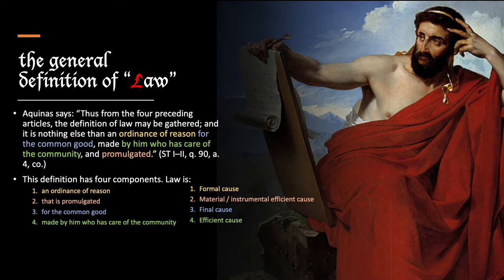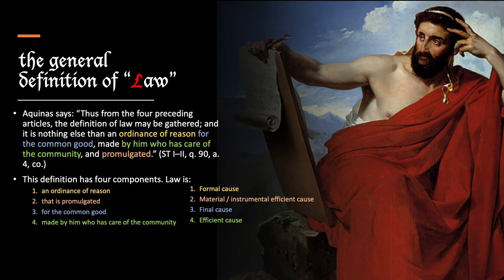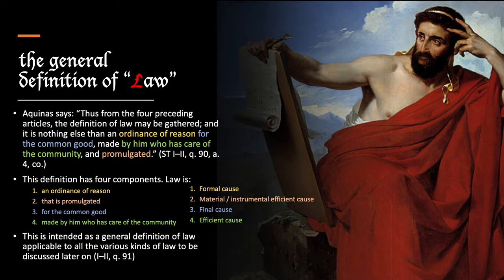According to Aristotle and Thomas Aquinas, a good definition will define a thing by all four of its causes: formal, material, final, and efficient cause. This definition is a good definition because it does define law according to all four of its causes. The formal aspect of law is that it's an ordinance of reason. The material or instrumental efficient cause in which law is found is its promulgation. The final cause or purpose of law is the common good — law is ordered towards protecting and furthering the common good. Finally, the agent who brings about laws is the one who has care for the community which is governed by those laws. This is intended as a general definition of law applicable to all the various kinds of law.